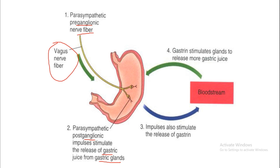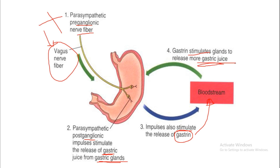The parasympathetic preganglionic nerve fibers of the vagus nerve stimulate the parasympathetic postganglionic fibers, resulting in release of gastric juice from the gastric glands. Vagus nerve stimulation also stimulates the release of gastrin, a hormone released from the G cells into the bloodstream. Via the bloodstream, gastrin acts on the gastric mucosa, stimulating the glands to release more gastric juice and increasing gastric juice secretion.